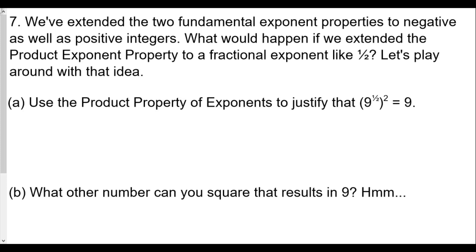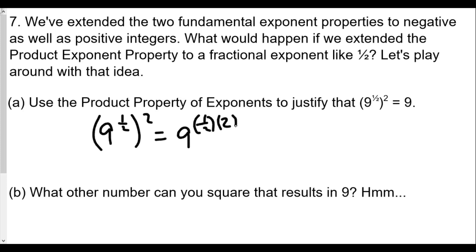Now, if we extend the product property to a fractional exponent like one half — let's explore: use the product property of exponents to justify that nine to the one half, squared, equals nine. Nine to the one half squared is the same as nine to the one half times two. One half times two is one, so that becomes nine to the first power, which equals nine. The left side becomes nine to the first power, equal to nine.